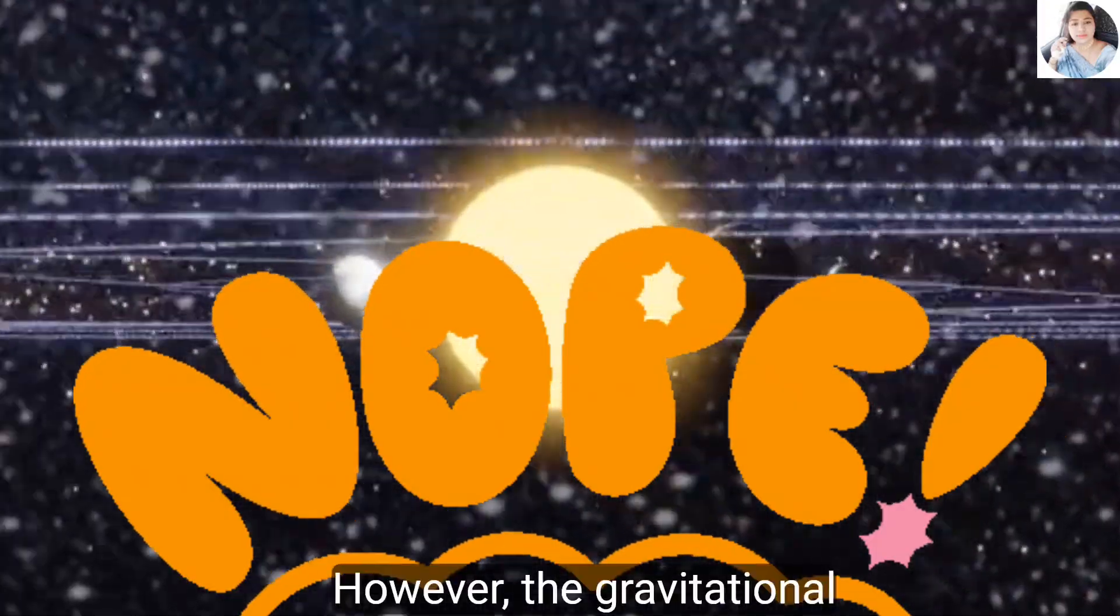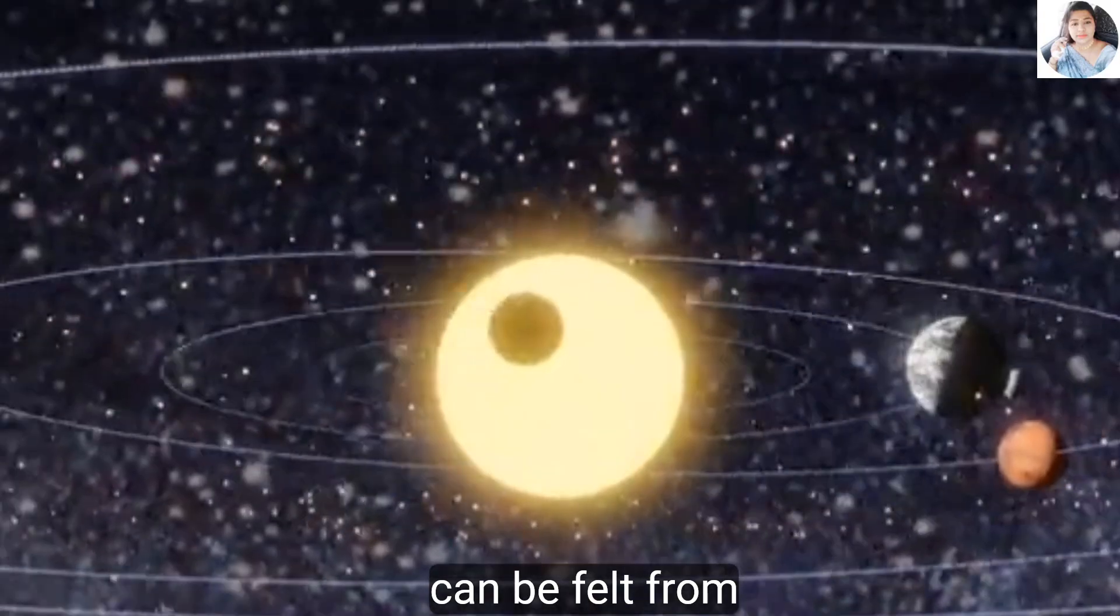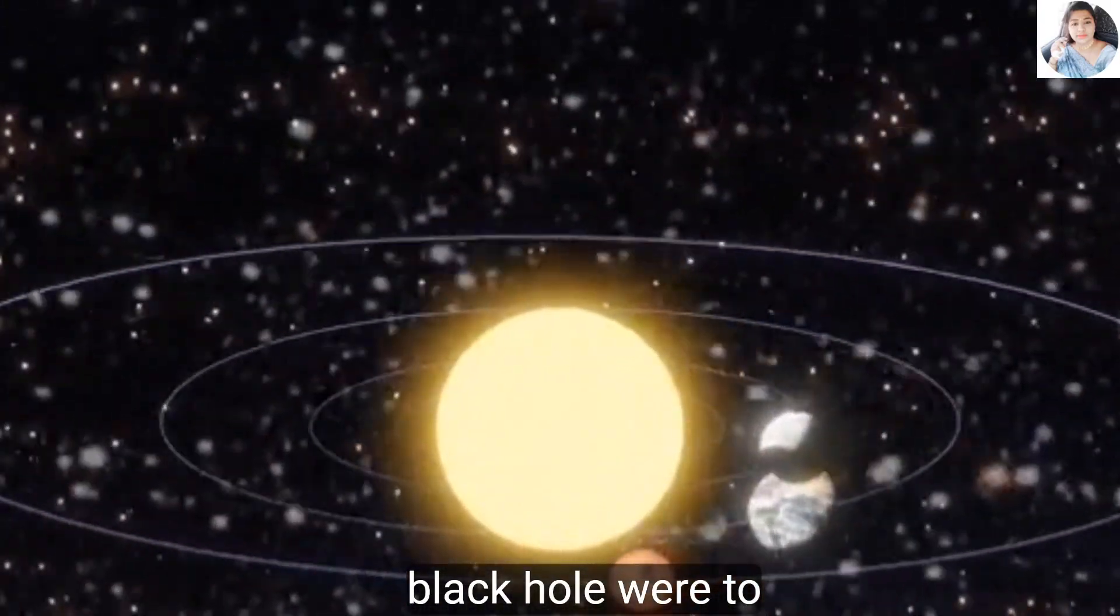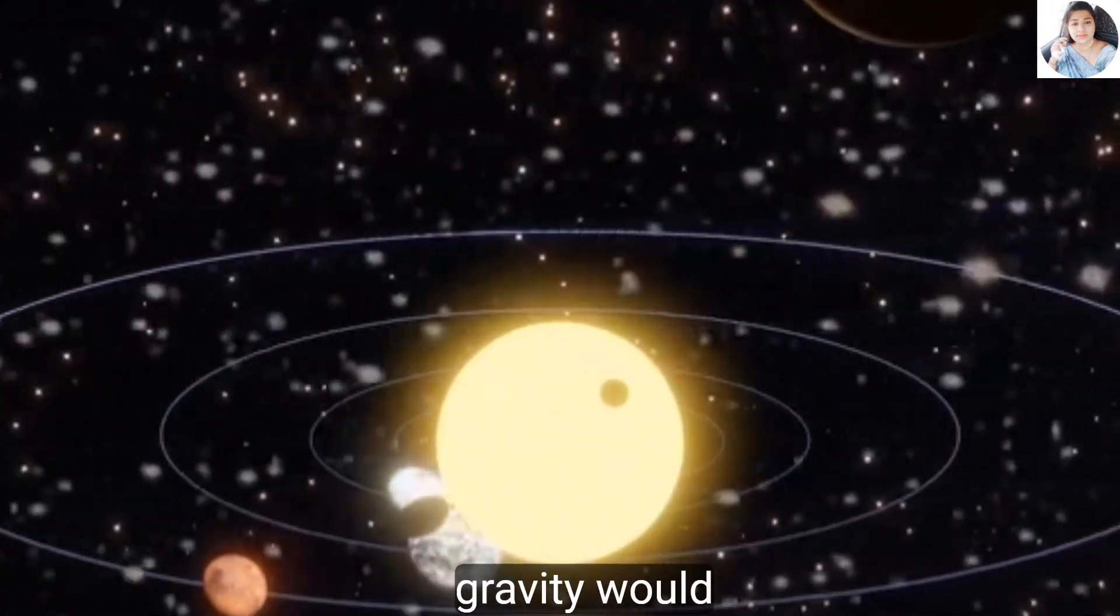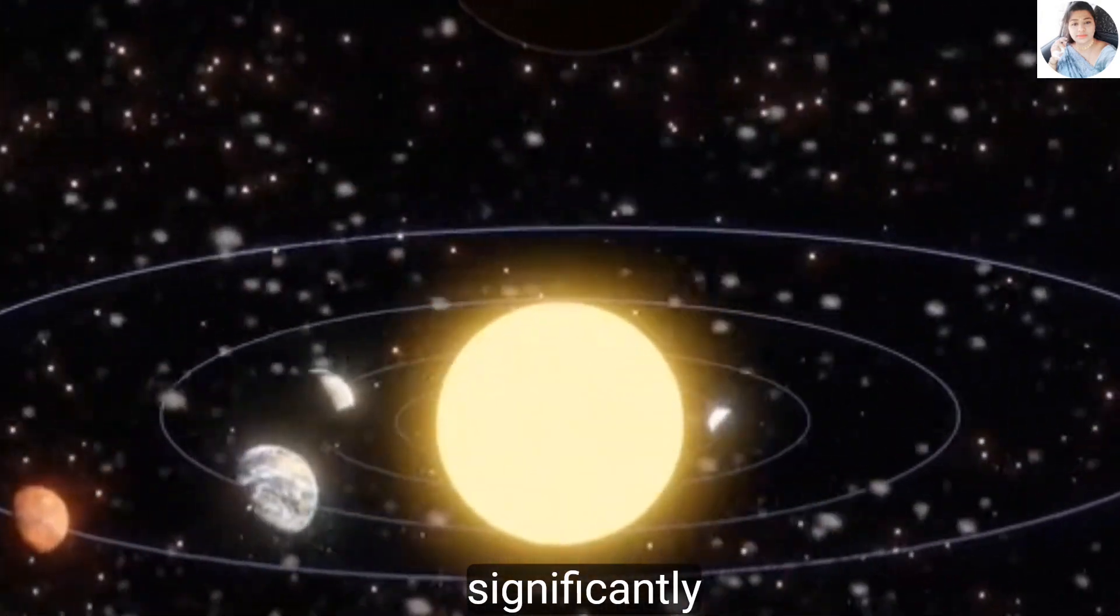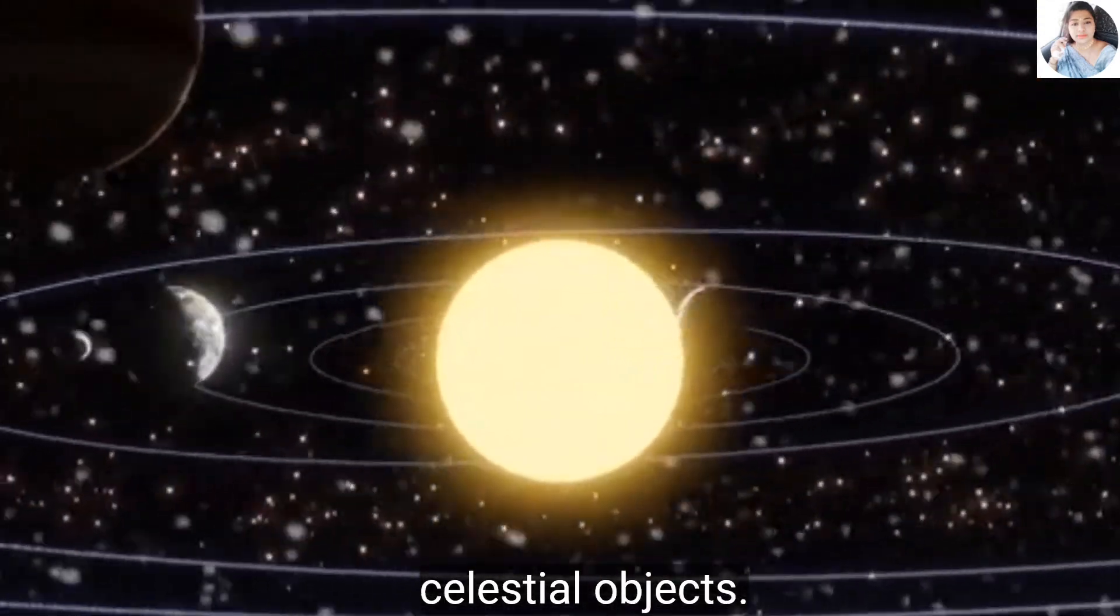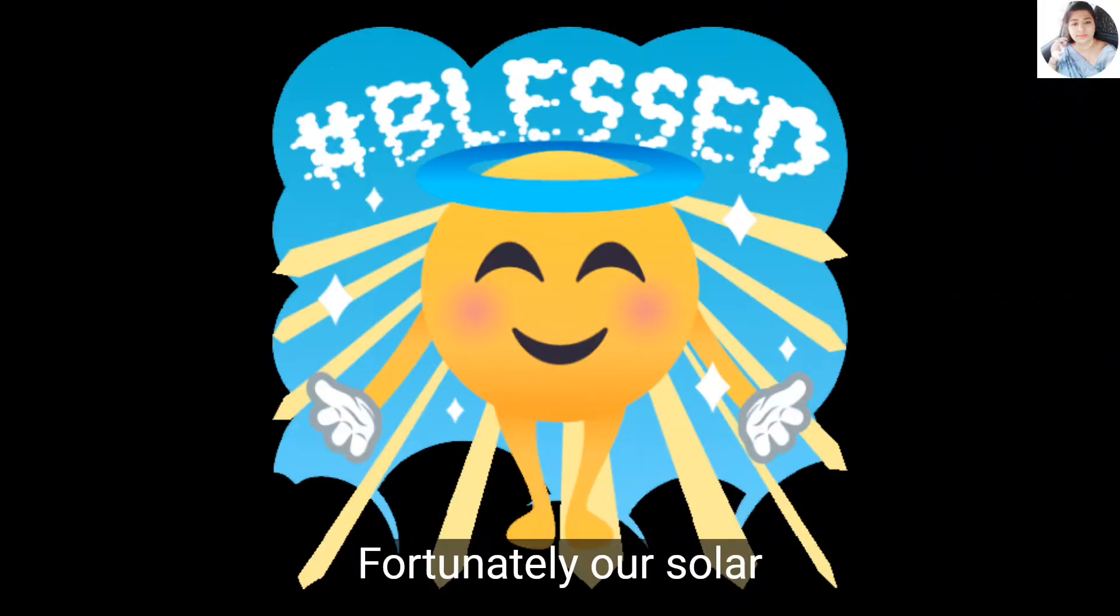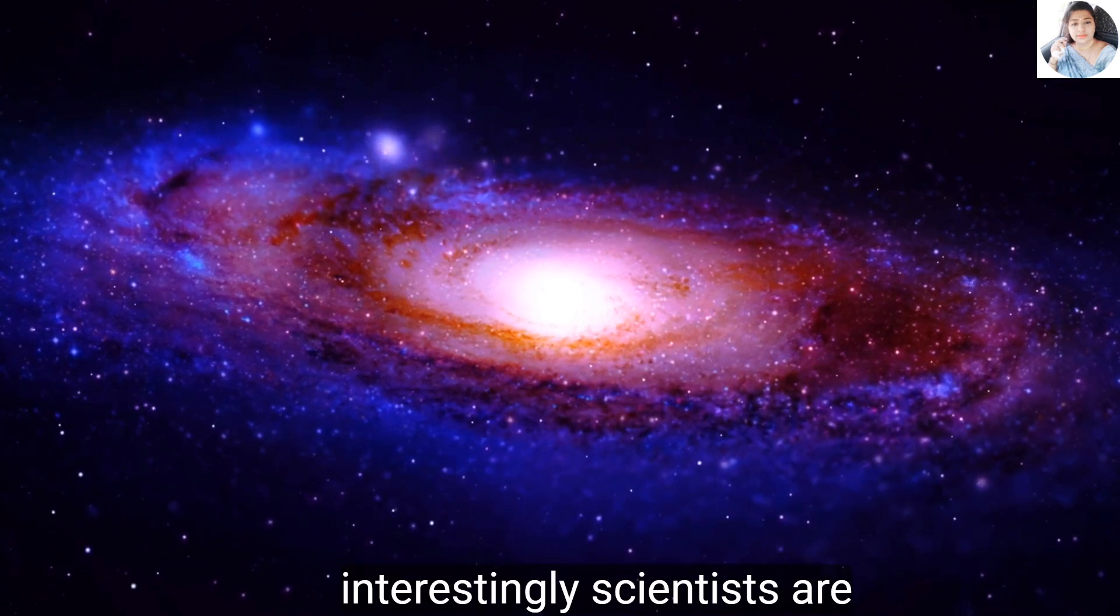However, the gravitational effects of black holes can be felt from vast distances. If a black hole were to wander into our solar system, its immense gravity would significantly disrupt the orbits of planets and other celestial objects. Fortunately, our solar system seems to be free from such disturbances for now.